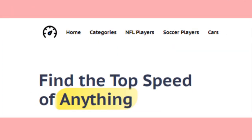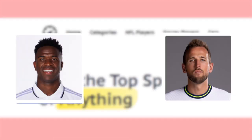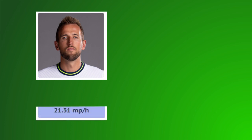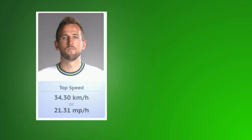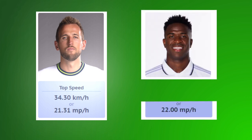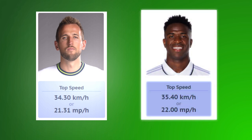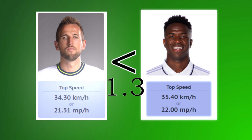Thanks to the site speedspeedy.com, I was excited to see and compare the speed of players — Vini Jr. and Harry Kane. Harry Kane's average top speed is 21.31 miles per hour, which equals 34.30 kilometers per hour. And Vini Jr. is 22 miles per hour, or 35.40 kilometers per hour. Vini is faster by just 1.31 miles or 1.10 kilometers per hour.